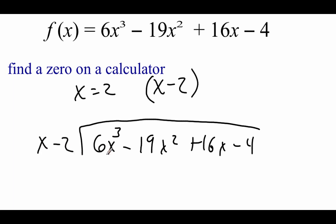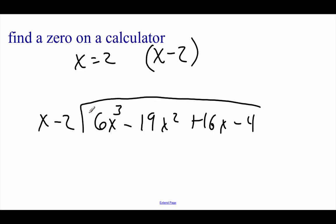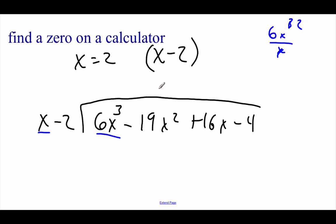Now we're going to start doing our long division. I want to focus on this 6x cubed and our x out in front. We have to think: what happens if we take 6x cubed and divide it by x? Well, one of those x's on top would cancel out with that x on bottom, and we'd be left with 6x squared. I like to line these up in columns — an x cubed column, an x squared column, a plain x column, and then our constant on the end. Since this is 6x squared, I'm going to put that above our x squared column.